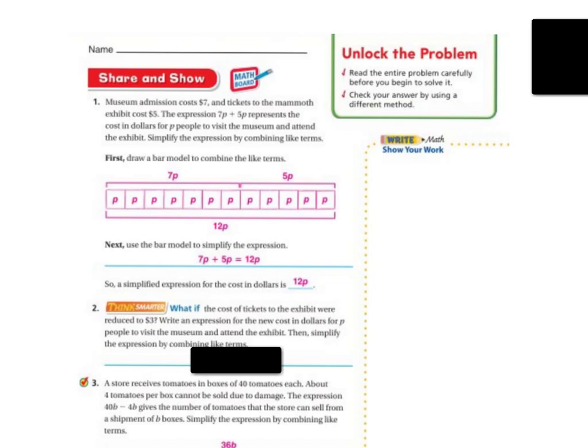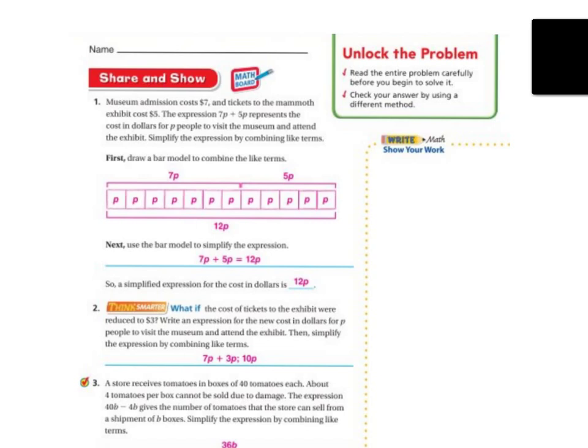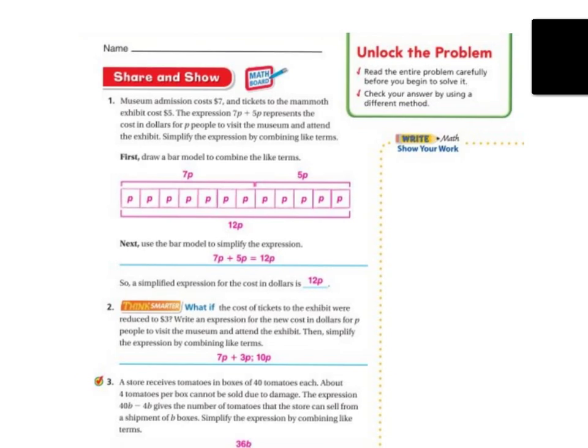What if the cost of the ticket to the exhibit were reduced to $3? Write an expression for the new cost in dollars for P people to visit the museum and attend the exhibit. And then simplify it by combining like terms. Well, it would be 7P plus 3P, not 5P. And that would give you 10P. Remember, they said to rewrite this one as 3P. So we did that. And 7 plus 3 is 10. So the answer would be 10P.